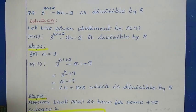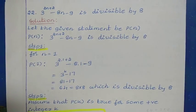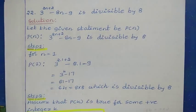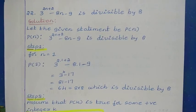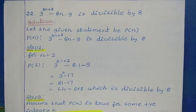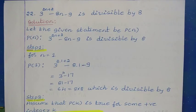Q22: 3 to the power 2n plus 2, minus 8n minus 9, is divisible by 8. Now let us say that the given statement is P of n.